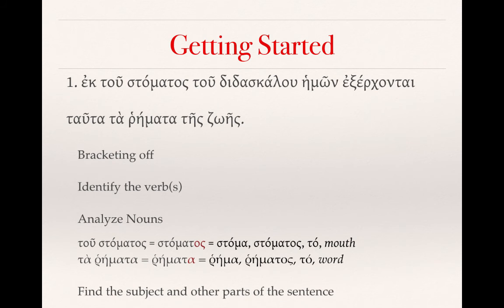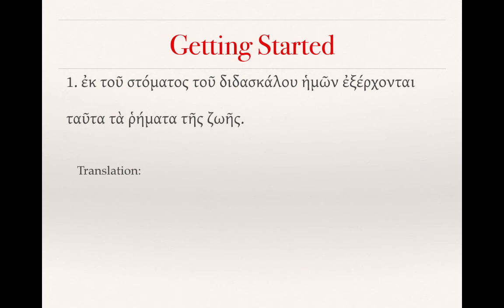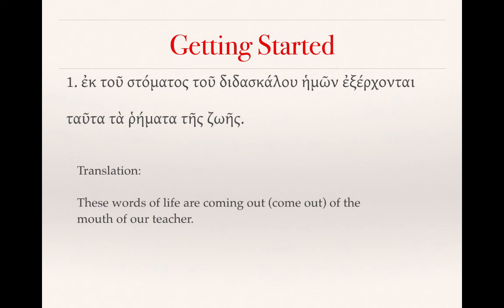The next noun is ta remata. Again, remata has that alpha at the end indicating that it's a neuter plural, nominative or accusative — but in this case, we know from context that it is nominative, from to rema, meaning word. You have ta in front of it, that definite article, which is a neuter plural either accusative or nominative. So those are giving you clues as to what those words are, even if you forgot some rules about third declension nouns. From there, you can find the subject and other parts of the sentence, leading to a translation: These words of life come out of the mouth of our teacher. Note that Greek can put the subject at the very end of a sentence, where in English we would expect it at the beginning.